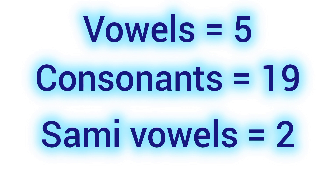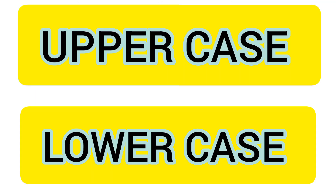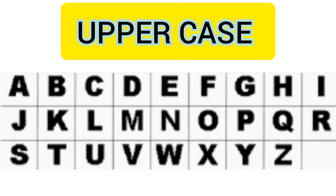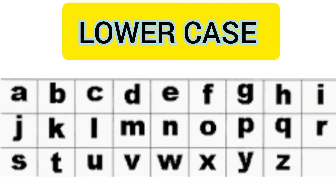We can write these letters in uppercase and lowercase. Uppercase means big alphabets — the capital A, B, C, D. And lowercase means small alphabets — the small a, b, c, d.